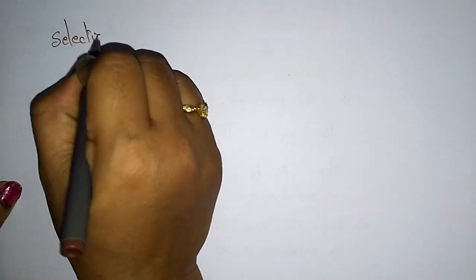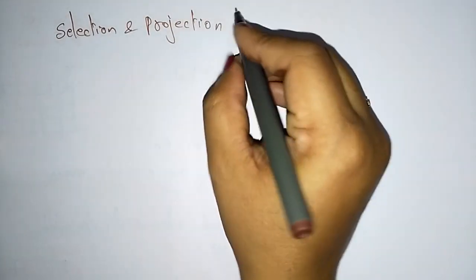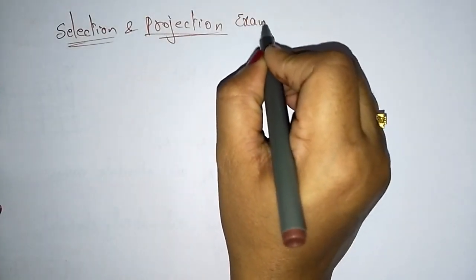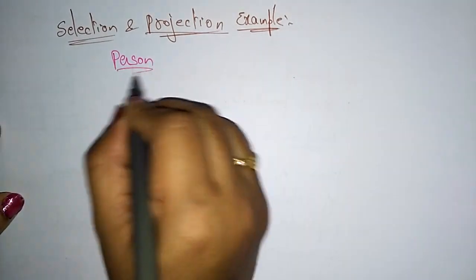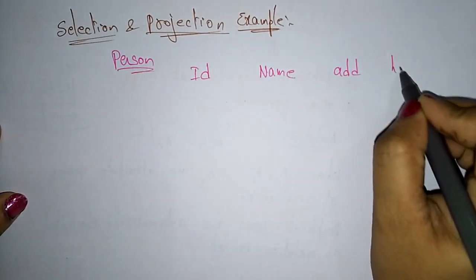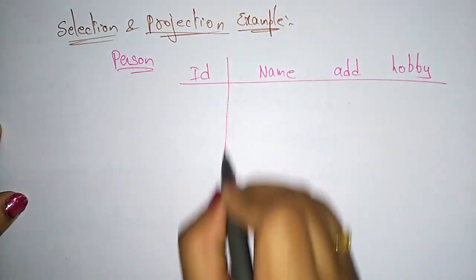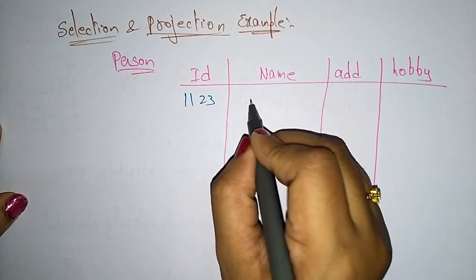Now let me take one simple example to understand the difference between projection and selection. I'm taking one table — the relation name is 'person'. This person table has the fields: id, name, address, and hobbies.